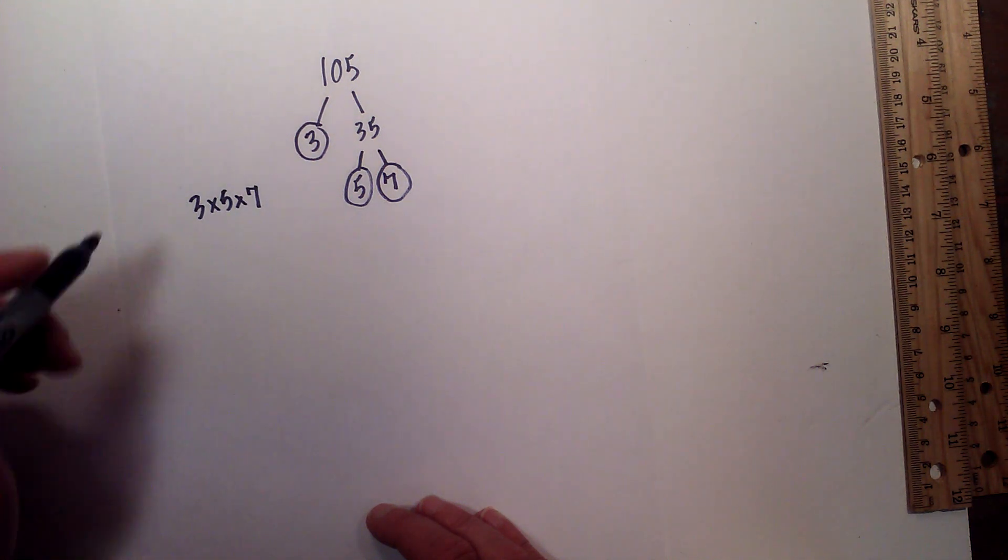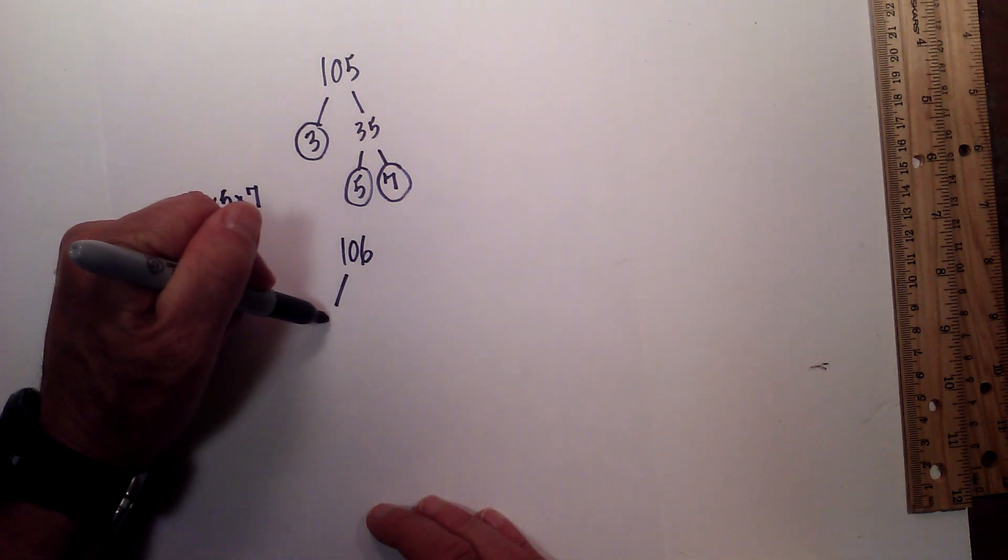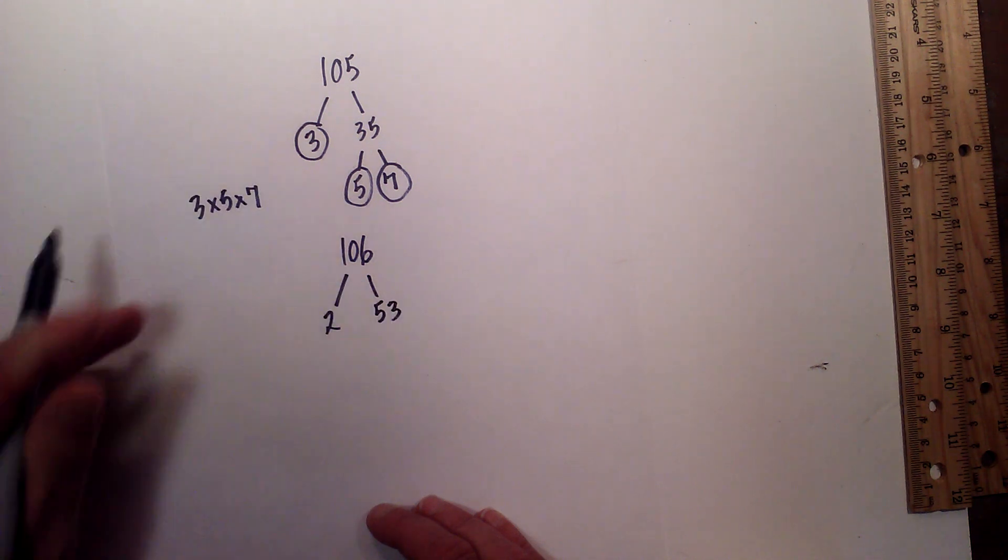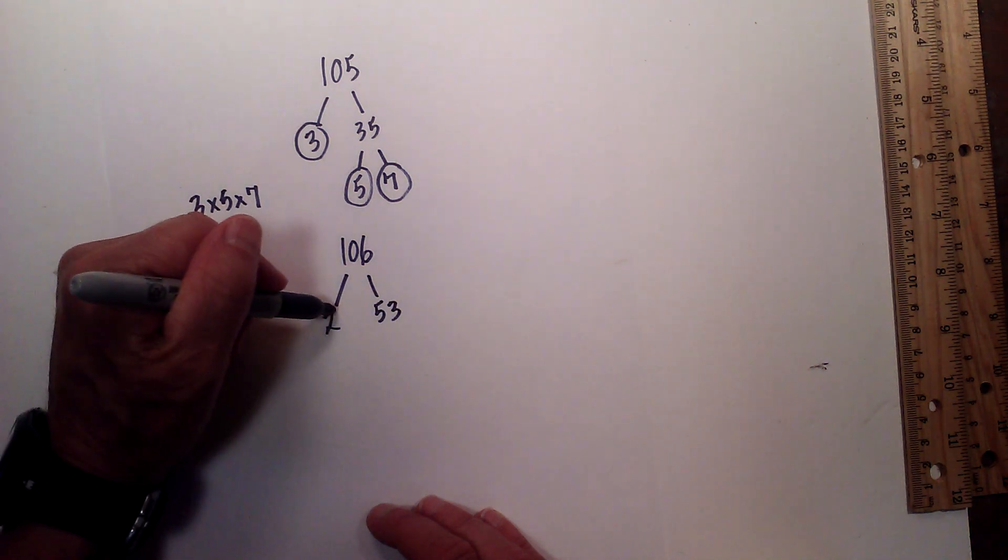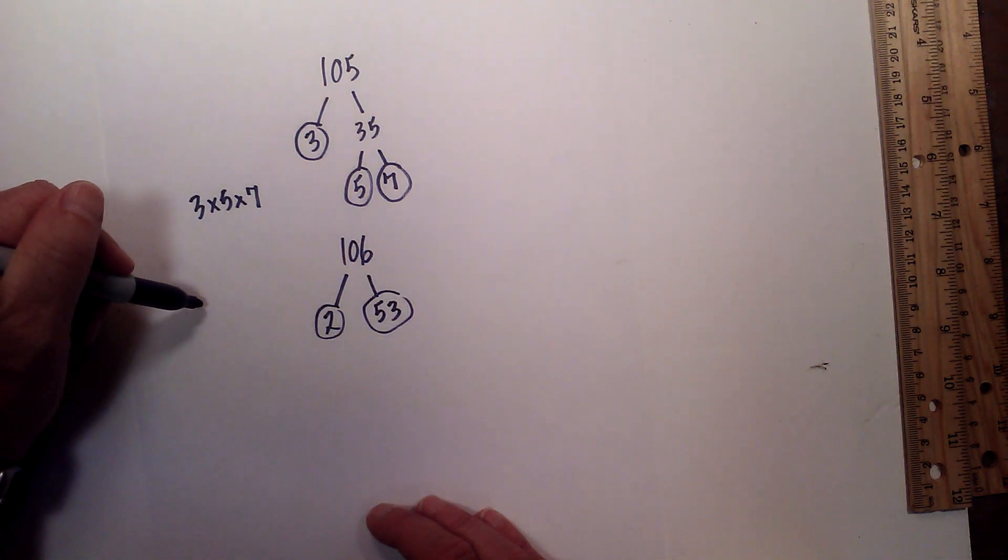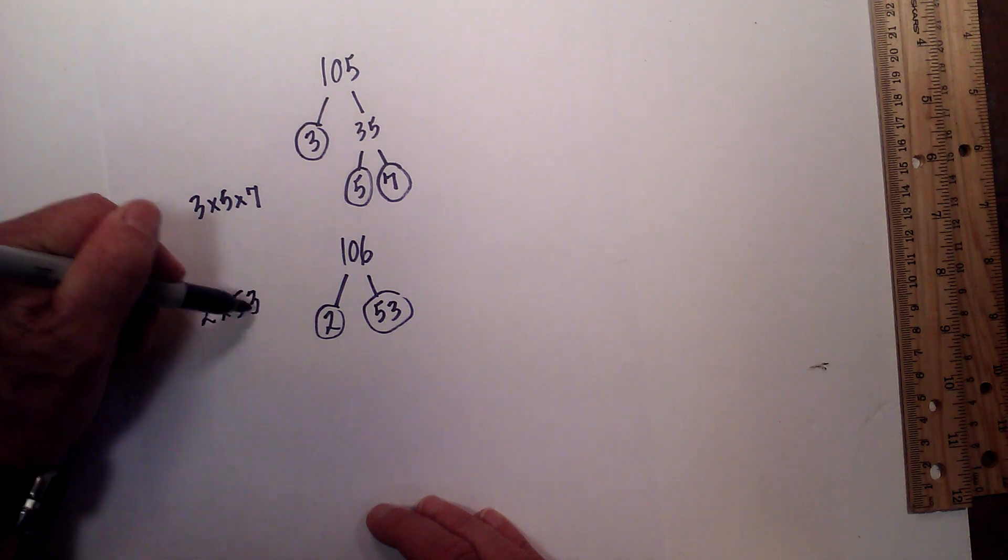So now let's look at 106. I will draw a factor tree and this one's rather short: 2 times 53 equals 106. They are both prime, so the prime factorization of 106 is 2 times 53.